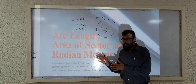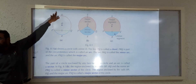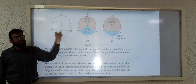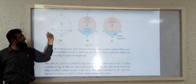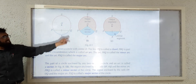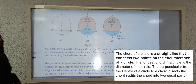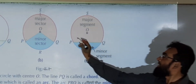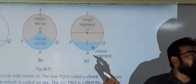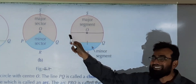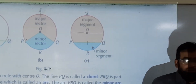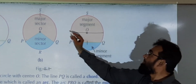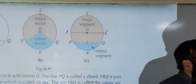Here we have a circle with center O. This green line PQ touching the circle is called the chord of the circle. If a chord passes through the center of the circle, it is called the diameter. Lines like PQ and AB are all chords of the circle.